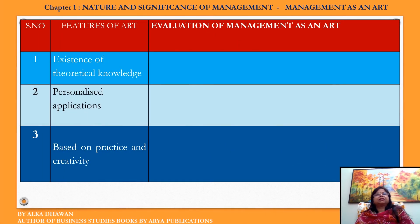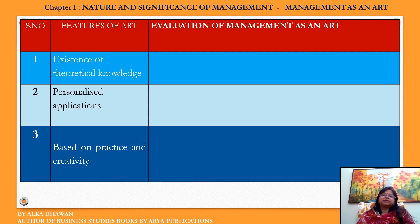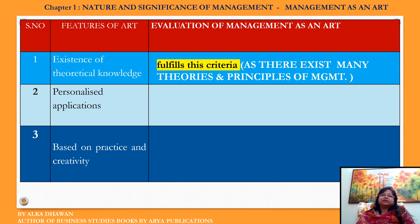After understanding the meaning and features of Art, we now evaluate Management as an Art. When we talk about the first feature — Existence of Theoretical Knowledge — Management definitely fulfills this criteria. Chapter 2 in the syllabus is named Principles of Management, which contains a number of theories and principles formulated by various management experts. So management definitely fulfills this criteria, as there exist many theories and principles of management.